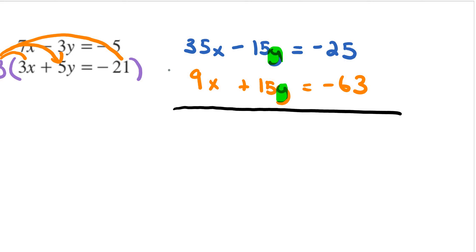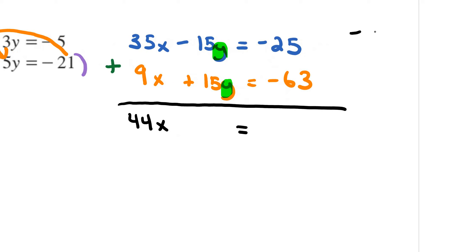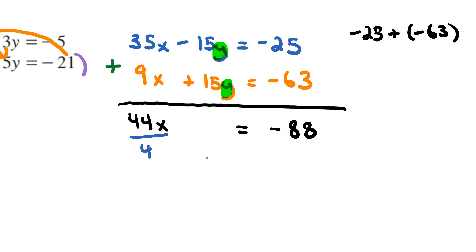You're going to add them. If you subtracted them, it would be negative 15 minus 15, which would give you negative 30y. So you want to add them, not subtract. So 35 plus 9 — what's 35 plus 9? That's going to be 44x. And the y's will cancel out. And then negative 25 plus negative 63 is the same as negative 25 minus 63, which is negative 88. Then you can divide both sides by 44, and negative 88 divided by 44 is going to be negative 2. So x equals negative 2.